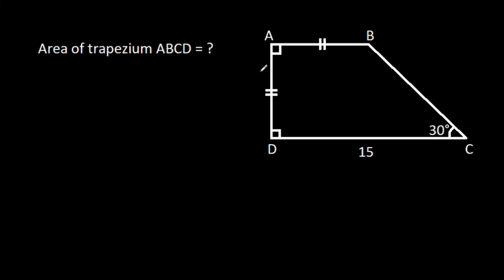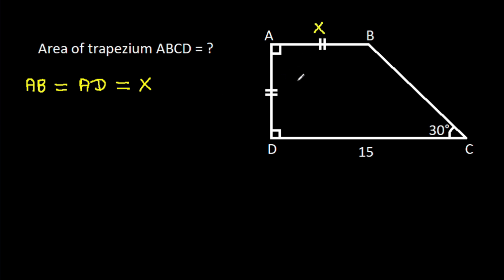In this video, we have been given that ABCD is a trapezium, AB is equal to AD, CD is 15, and angle BCD is 30 degrees. Then we have to find the area of ABCD. We have AB equal to AD, suppose X. If AB is X, then AD will be X and CD is 15.